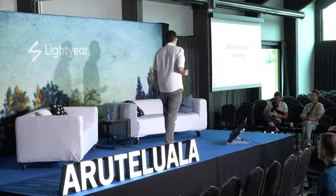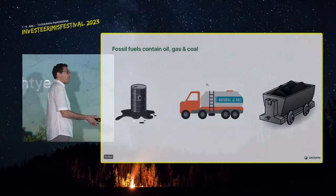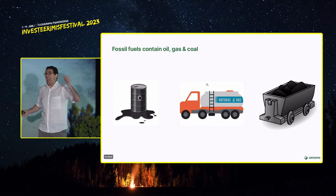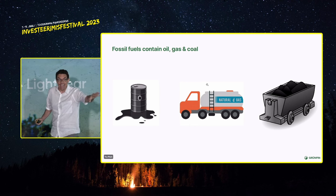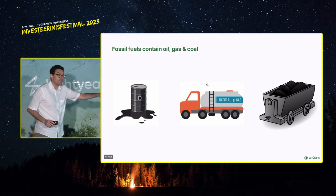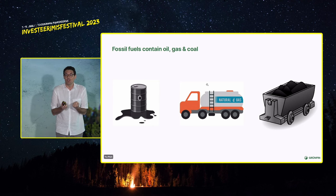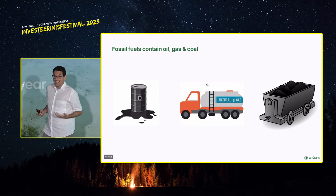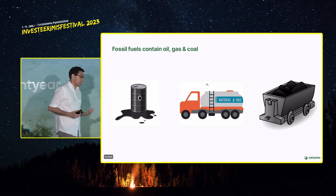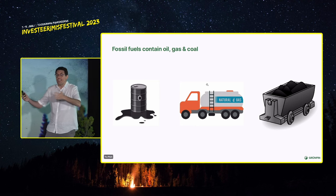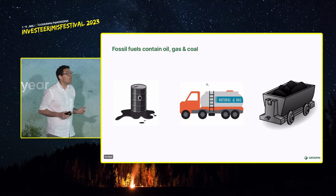So the basics of global warming: fossil fuels. What are fossil fuels? Fossil fuels are fossils that have been under the ground for millions of years — from dead plants, from dead animals. They contain oil, gas, and coal. We burn these fossil fuels to produce the electricity in our homes, the heating in our houses, our transportation, the way we cook with stoves. They all historically come mostly from fossil fuels.